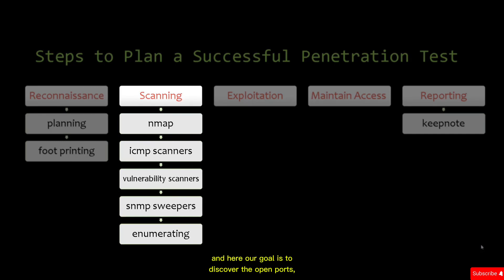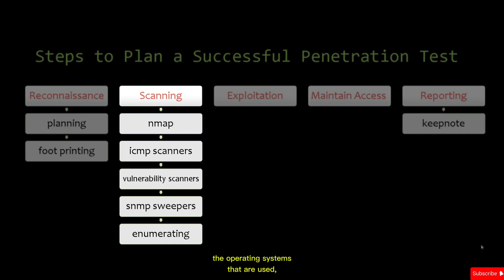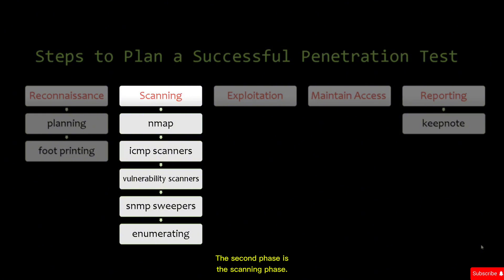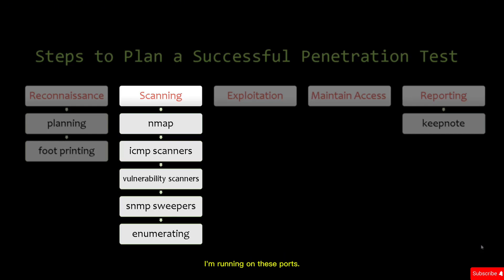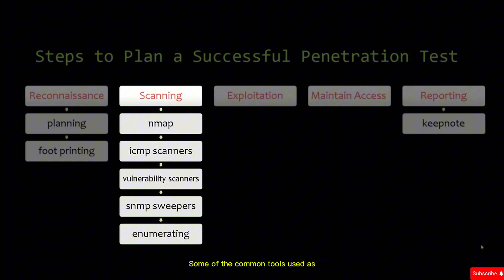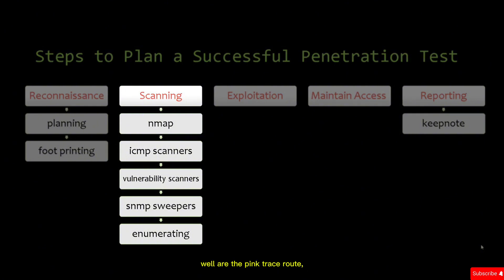The second phase is scanning. Our goal here is to discover the open ports, available access points, the operating systems in use, and to uncover the services running on those ports. Our goal is to perform external and internal scanning, ping machines to determine network ranges, and build a profile of the individual systems. Common tools include ping, traceroute, SuperScan, Netcat, and Nmap.